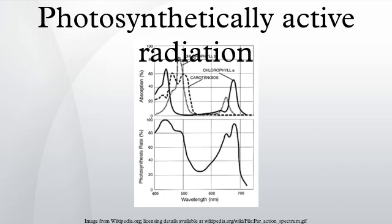Photosynthetically active radiation, often abbreviated PAR, designates the spectral range of solar radiation from 400 to 700 nanometers that photosynthetic organisms are able to use in the process of photosynthesis.